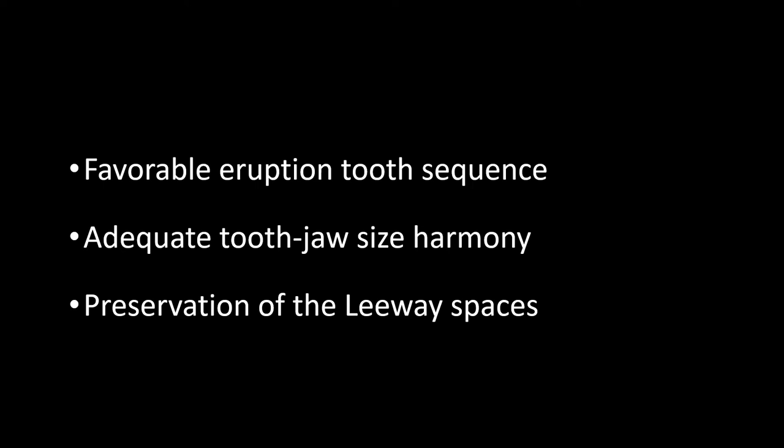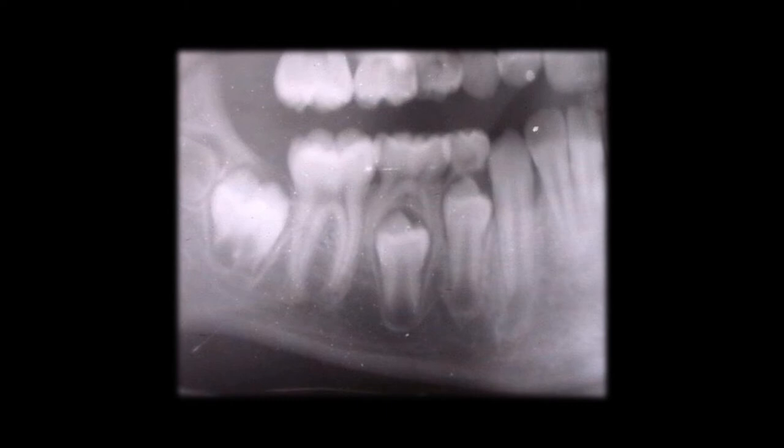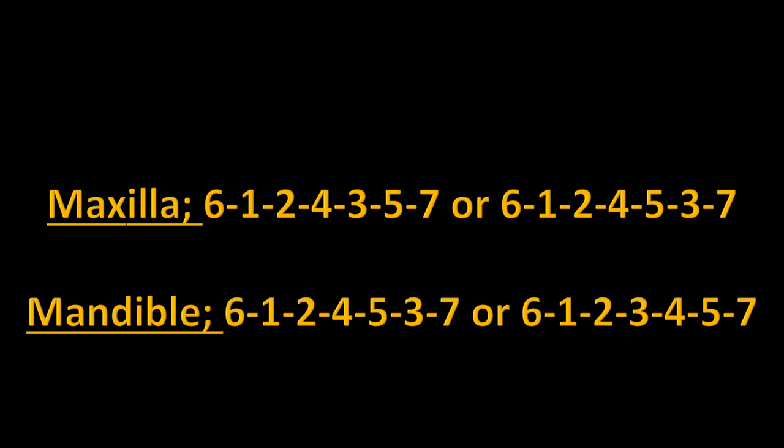Additionally, adequate tooth-jaw size harmony and preservation of the leeway spaces are essential. In the maxilla, the first premolar is generally the first to erupt, and the primary and permanent tooth sizes are almost equal. The primary canine and second premolar tend to exfoliate simultaneously, allowing the first permanent premolar to drift distally and provide space for the permanent canine. Although there is variability in the sequence of arrival, there is a generally expected order.